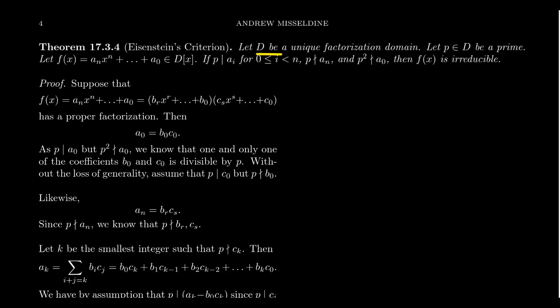So suppose D is a unique factorization domain, and let P be a prime element in that unique factorization domain. Then the polynomial f(x) given as aₙxⁿ + aₙ₋₁xⁿ⁻¹ + ... + a₀. If this is a polynomial in D[x], further suppose that P divides all of the coefficients of f except for the leading term.